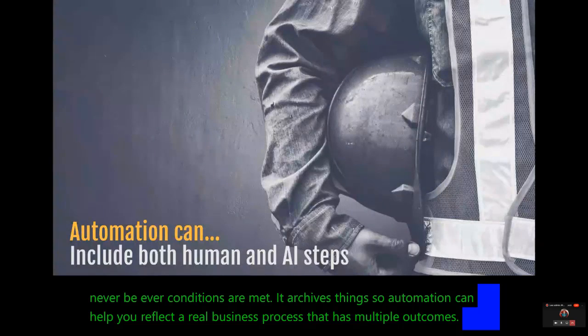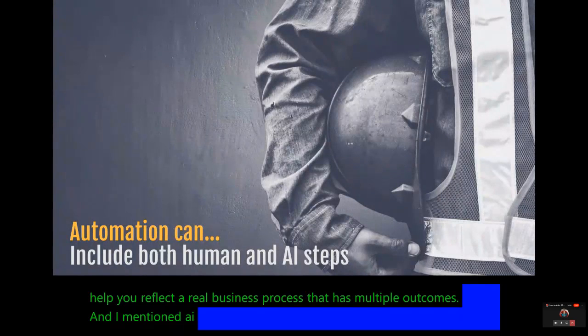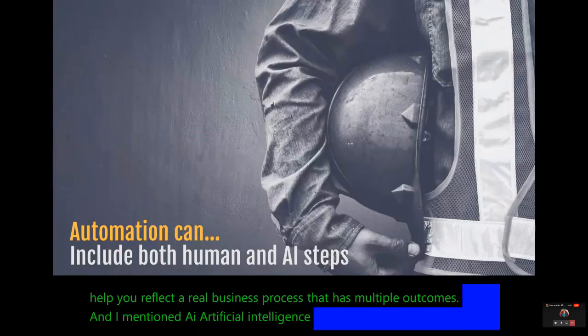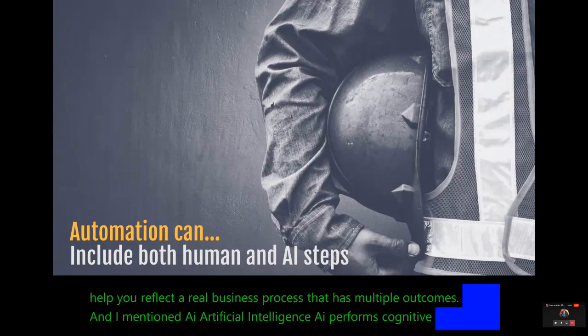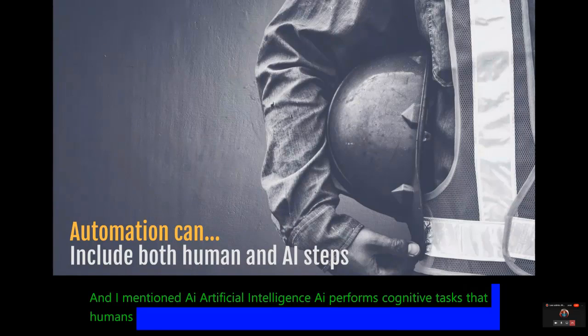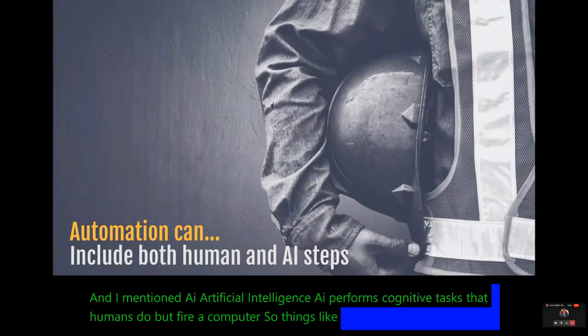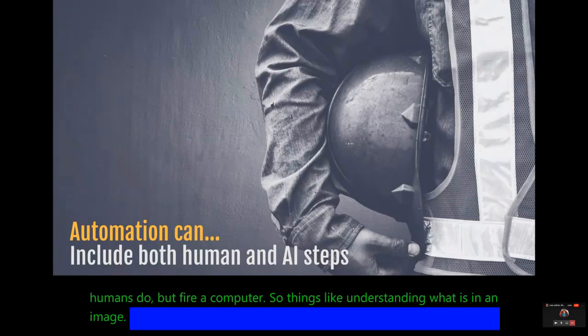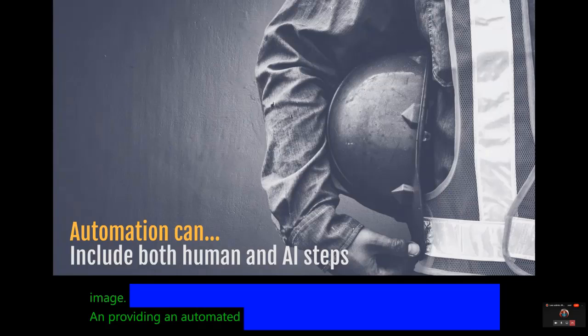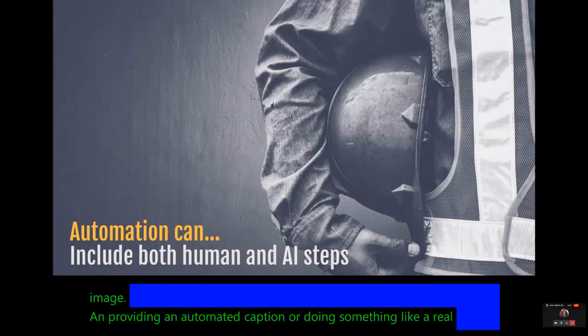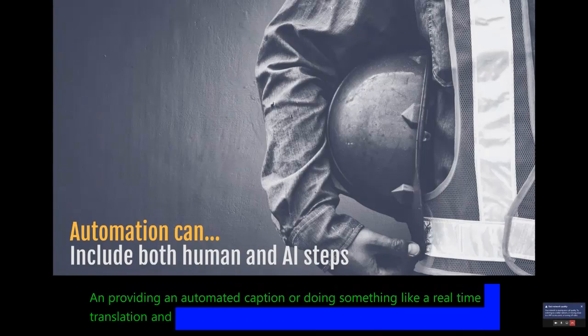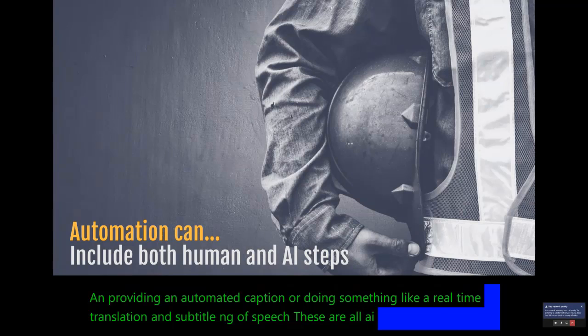I mentioned AI, artificial intelligence. AI performs cognitive tasks that humans do, but by a computer. So things like understanding what is in an image and providing an automated caption, or doing something like a real-time translation and subtitling of speech. These are all AI tasks, so we can use AI inside automation to make it more clever.